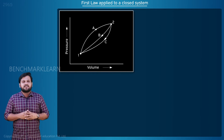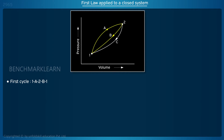Let us consider the first cycle 1A2B1. Here the process starts from state 1 to state 2 through path A, and it returns to state 1 through path B. Now the first law is applied to the cycle 1A2B1. This means the first law is applied to the process from state 1 to state 2 along path A, and the process from state 2 to state 1 through path B.